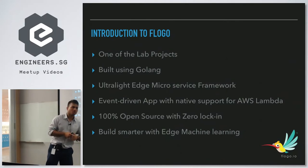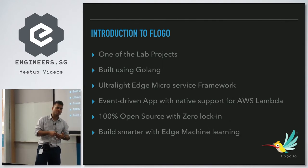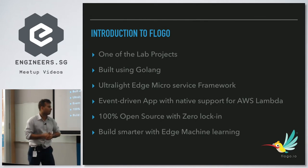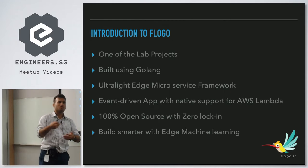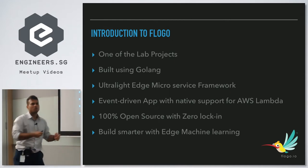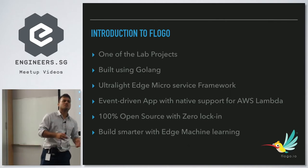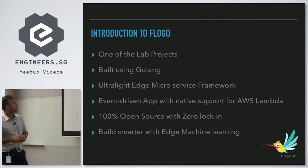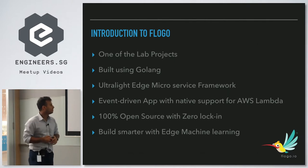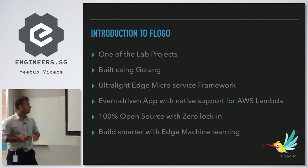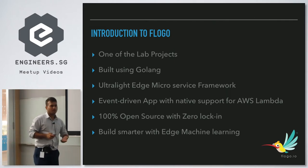FlowGo is one of the innovation lab projects we have in our company. We work on emerging technologies, find something interesting, and build on top of it. Similar to how Java had the Spring Framework on top, FlowGo provides common functionality so you can focus on business logic. It's built using Golang, and is an ultra-light edge micro-service framework — an event-driven app with native support for AWS Lambda and it's 100% open source with zero lock-in.